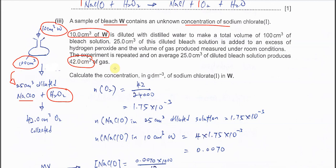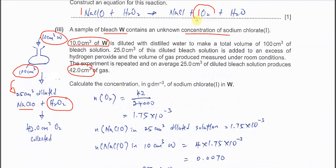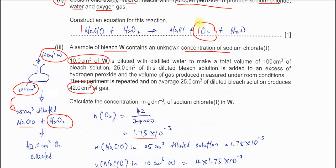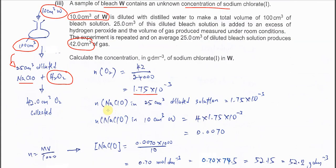This 42 cm³ is oxygen. First we need to calculate the moles of oxygen: 42 over the molar volume gives you this mole, which is the moles of oxygen produced. From here we get the moles of sodium chlorate, which is 1.75 × 10⁻³. The sodium chlorate will have the same moles because it's a 1 to 1 mole ratio. So we know that the sodium chlorate in the 25 cm³ of dilute solution that reacted has the same moles.